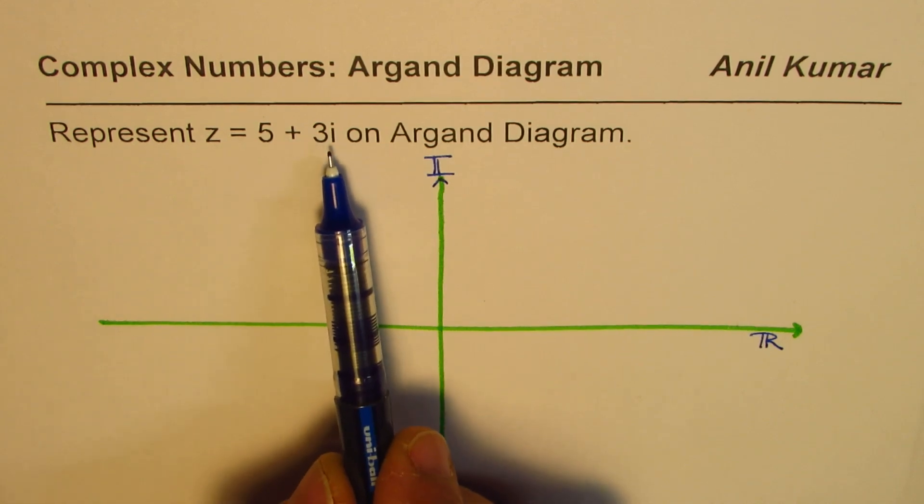We need to represent the complex number z equals 5 plus 3i. Now 5 is the real part and 3 is the coefficient of imaginary part. So let's write marks like 1, 2, 3, 4, 5 - so this is 5 on the real side.